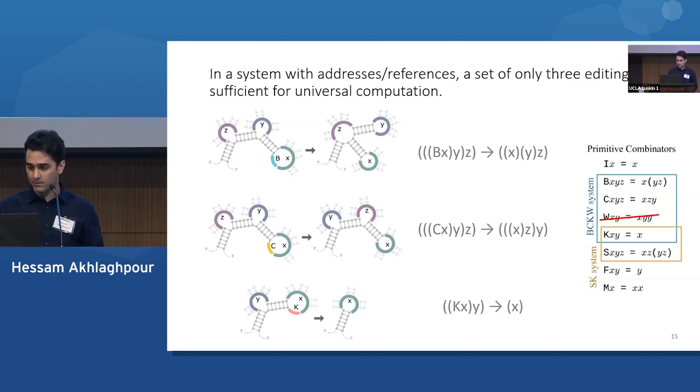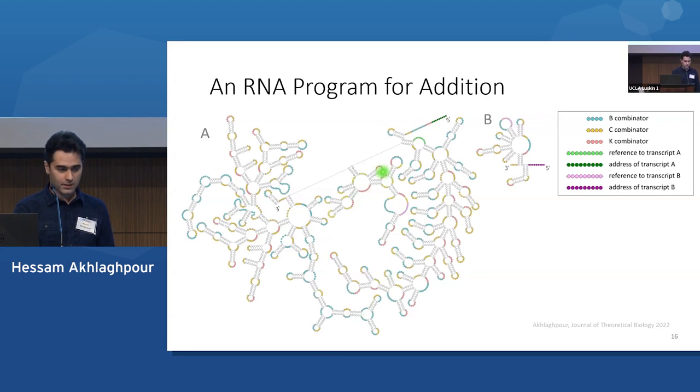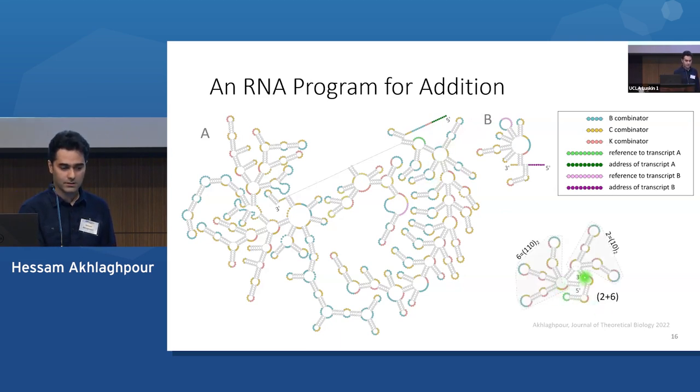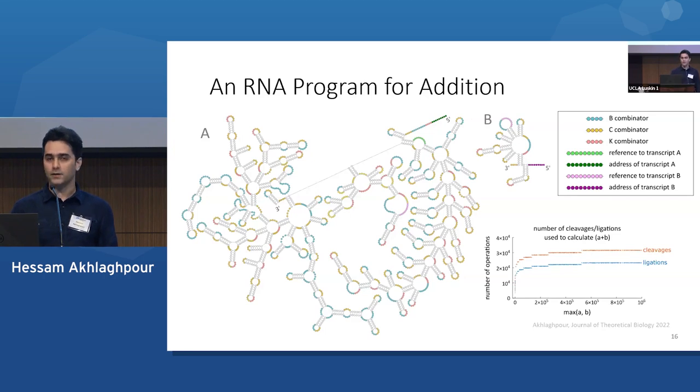So just to illustrate an example of how this might look like for computing an actual function, this is an RNA program that I just constructed that carries out unbounded addition. So it consists of two RNA strands that are recursive. Each one refers to itself, but then I think A refers to the B transcript. And so if I want to compute something like two plus six, I can do that through this strand here that encodes for the number two here with its binary representation and the number six here. And this references this A program. So A gets integrated in there. The operations can happen one by one. And then if you simulate this, you can see that the number of operations required for adding two numbers is proportional to the logarithm of the sum.